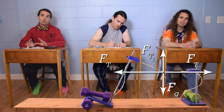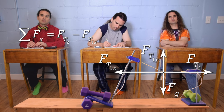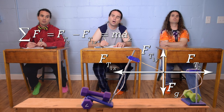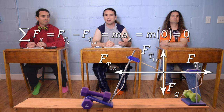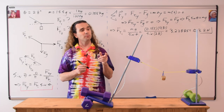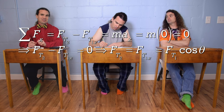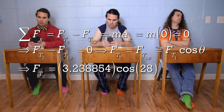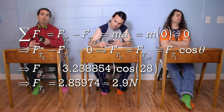Billy, could you please do step five? The last step is to sum the forces in a direction perpendicular to our previous step. The net force in the x direction equals tension force two minus the tension force one in the x direction, which equals mass times the acceleration in the x direction. The acceleration in the x direction is zero because the mass hanging isn't moving — it is an object in equilibrium because the net force in all directions is equal to zero. Therefore, tension force two equals tension force one in the x direction. From our equation holster, tension force one in the x direction equals tension force one times the cosine of theta. Therefore, tension force two equals 3.238854 times the cosine of 28 degrees, which is 2.85974 — with two sig figs, 2.9 newtons.